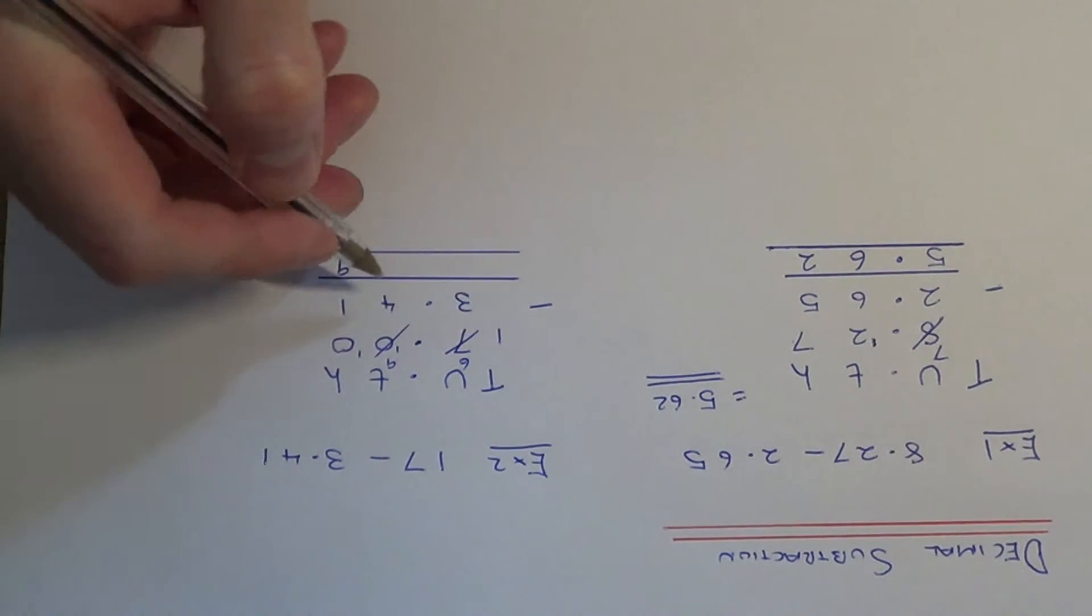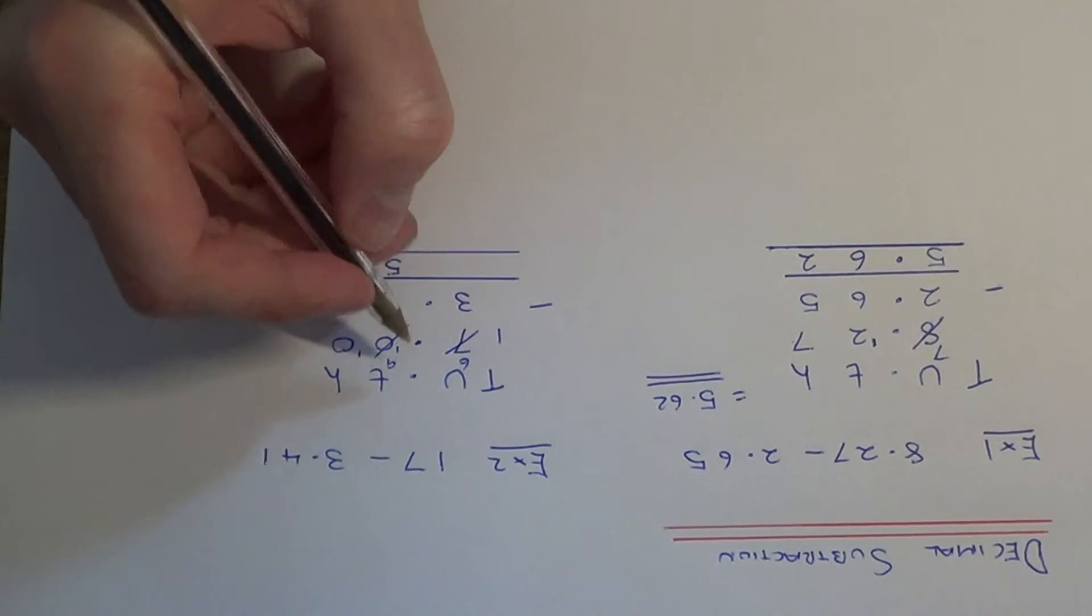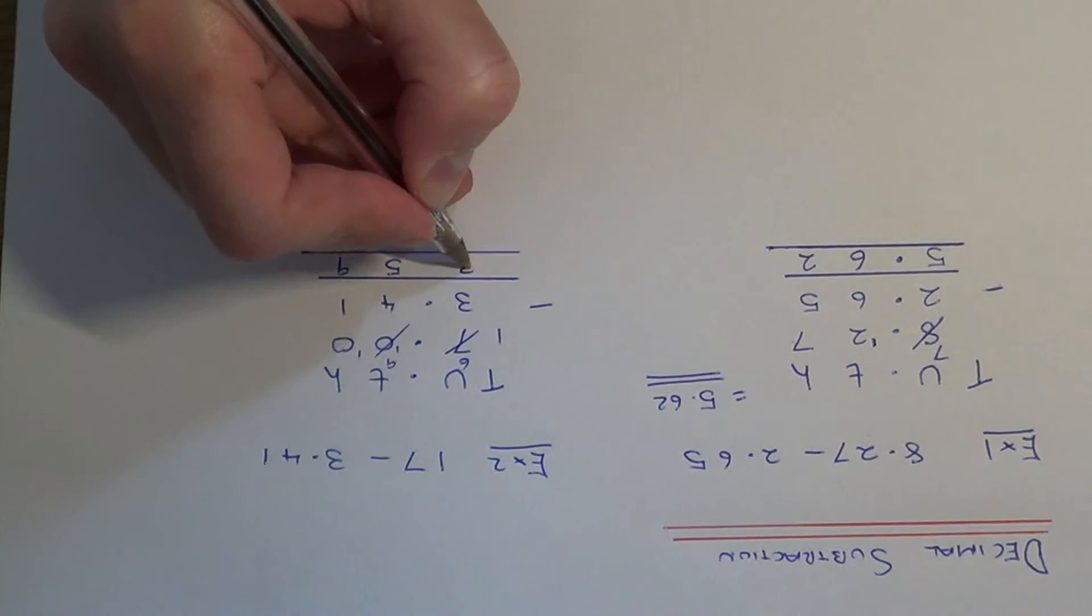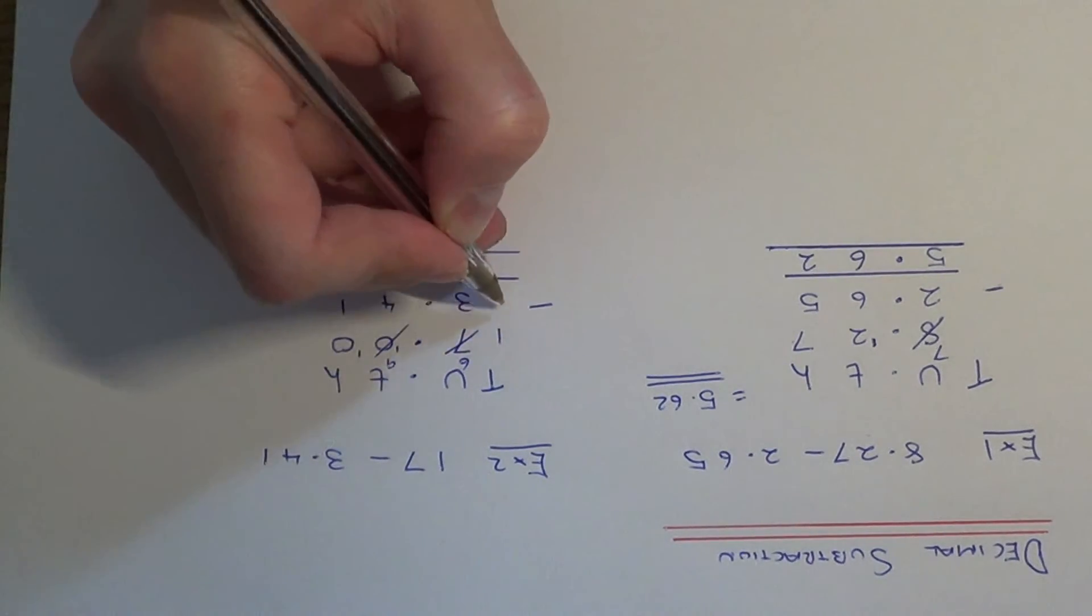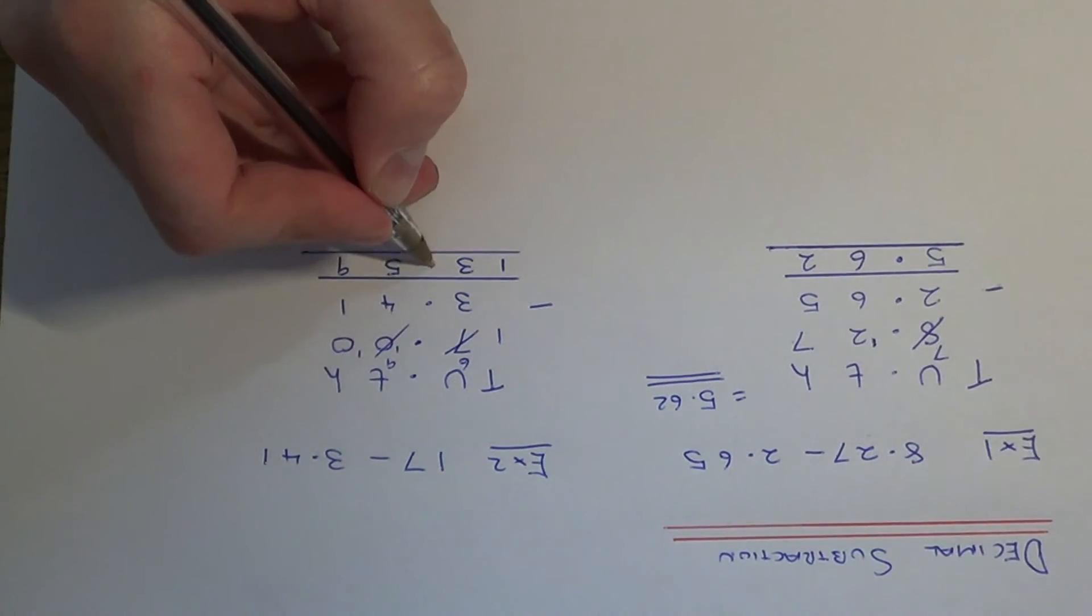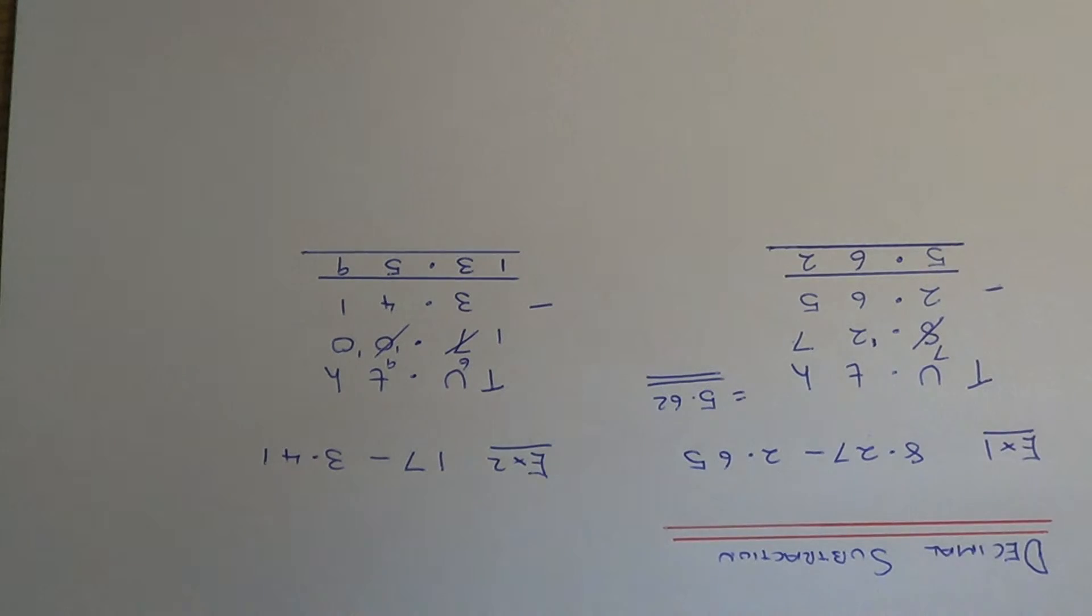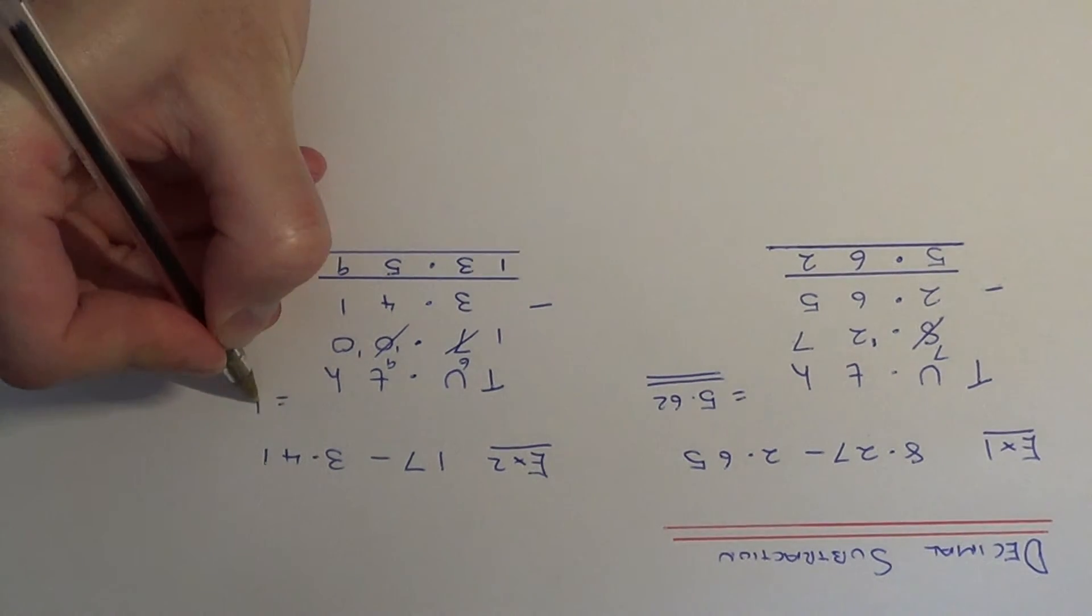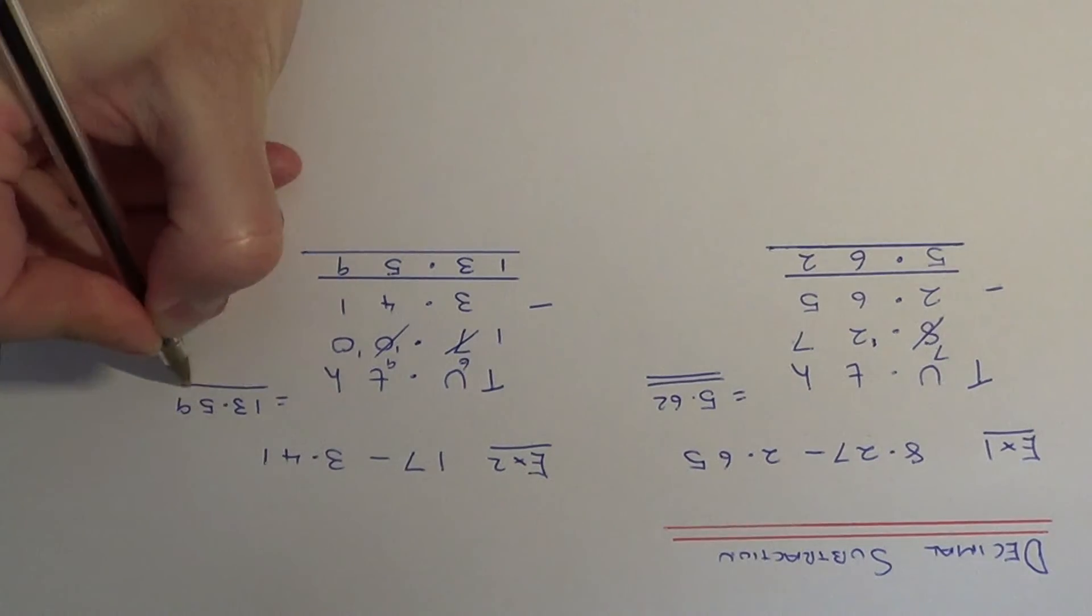9 take away 4 is 5, 6 take away 3 is 3, and 1 take away nothing is 1. Again, the decimal point will stay in line in your answer. So our final answer is 13.59.